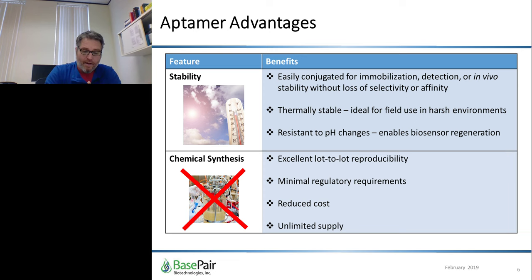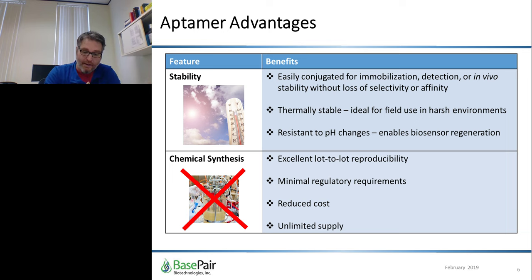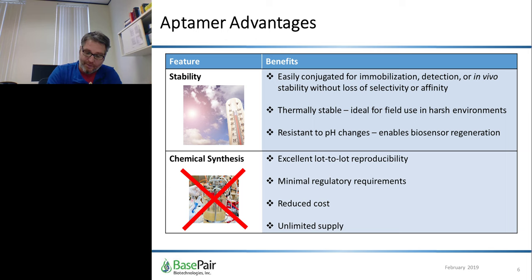Aptamers are readily modified — even during synthesis, many chemical modifications can be incorporated for enhanced binding, in vivo stability, and detection. Common modifications include fluorophores and quenchers, attachment chemistries such as thiols, amines, biotins, or click chemistries. Whereas antibody labeling almost always results in a distribution of labels through multiple lysines, aptamers can be synthesized with a precisely defined degree of labeling, enabling much more consistency and control. Fourth, aptamers are produced by well-understood, very mature chemical synthesis technology. There is literally zero batch-to-batch variability in their production. They can be readily synthesized under GMP controls and resupplied indefinitely.